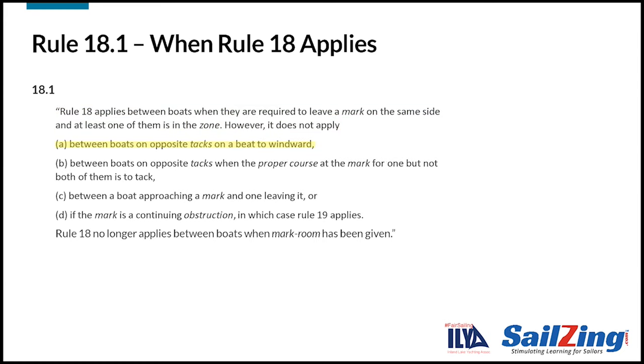The rest of the rule lists the exceptions, times when Rule 18 does not apply. The first exception is between boats on opposite tacks on a beat to windward. The rule also does not apply between boats on opposite tacks when their proper course at the mark for one boat, but not both of them, is to tack. Rule 18 also doesn't apply between a boat approaching a mark and one leaving it. And it doesn't apply if a mark is also a continuing obstruction, in which case Rule 19 applies.